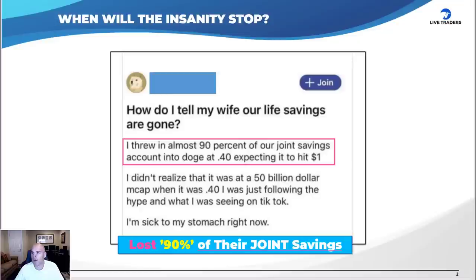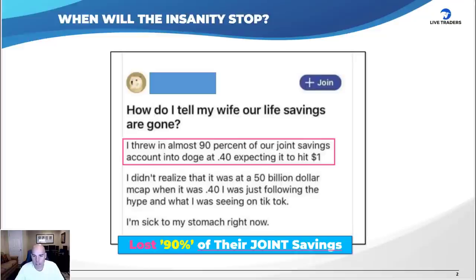Before we get into today's topic, let's talk about when the insanity will stop. These are not easy situations. I had someone write in: 'I'm married, and I threw in almost 90% of our joint savings account into Doge at $0.40, expecting it to hit a dollar. I didn't realize the market cap situation. I'm sick to my stomach right now.' Well, you should be.